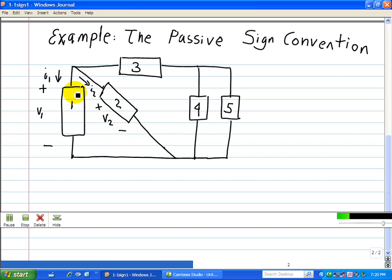Now again, if the values that I get after I do my analysis is negative, that means it's just opposite to what I assign my reference direction in terms of the current as well as the polarities.